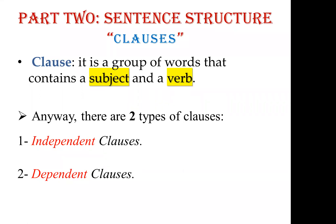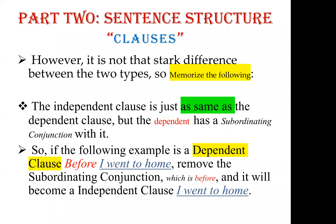There is not a huge difference between the two types. They are nearly the same — the only thing that makes an independent clause become a dependent clause is the addition of a subordinating conjunction. So whenever you take an independent clause and add a subordinating conjunction to it, it becomes a dependent clause. Conversely, if we have a dependent clause and remove the subordinating conjunction, we get an independent clause.